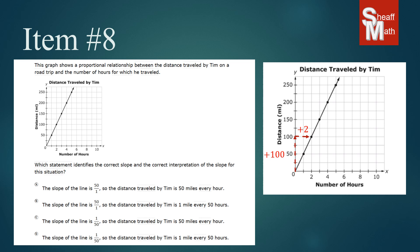When I make that slope triangle, it shows me that it rises 100 miles and goes over 2 hours — so 100 miles every 2 hours. Slope is rise over run, so 100 over 2 simplifies to 50 over 1. Looking at the answers, A and B say the slope is 50 over 1, while C and D say 1 over 50 — so C and D are not correct.